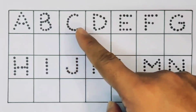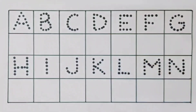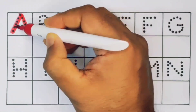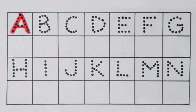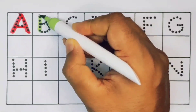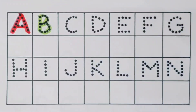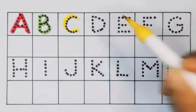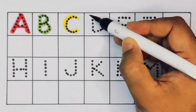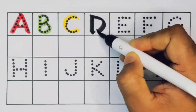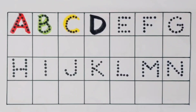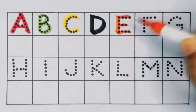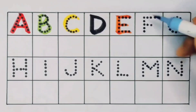A, A for aeroplane. Next kids, B, B for bat. Next kids, C, C for carrot. Next kids, D, D for duck.